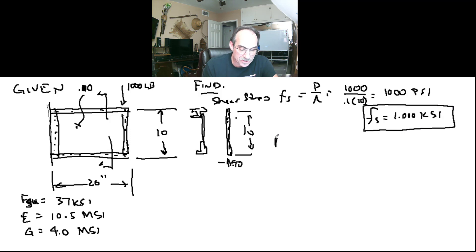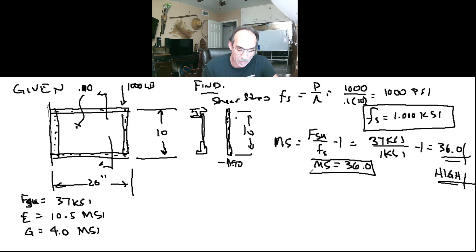If we want the margin of safety, all that is is the allowable, in this case FSU, divided by that calculated stress. That means we're looking at 37 KSI divided by 1 KSI minus 1, and that's a huge, whopping 36.0. That just means it's not critical. A lot of times in industry, we just say that is high. But in this class, I'm going to want you to give me precise numbers, so you would box your answer there.